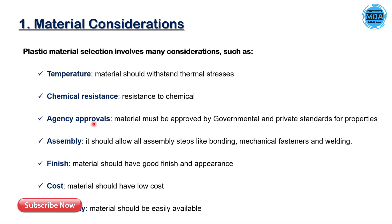In terms of assembly, the material should allow all assembly steps like bonding, mechanical fastening, and welding. For finishing, the material should have good appearance and surface finish. Cost is a very important factor — the material should have low cost. And in terms of availability, the material should be easily available. These are the key points to consider when selecting a plastic material for the part.